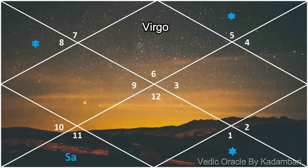For Virgo, the transit of Saturn in Shatabhisha nakshatra is happening in your 6th house — the house of competition, obstacles, and burden, where there is loss of balance and a search for justice. Saturn from here aspects the 8th house — both are intense houses. The biggest change in this transit is to re-prioritize your life and rearrange what aspects require more attention.